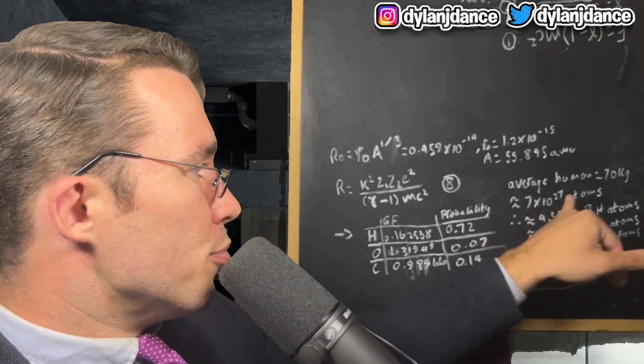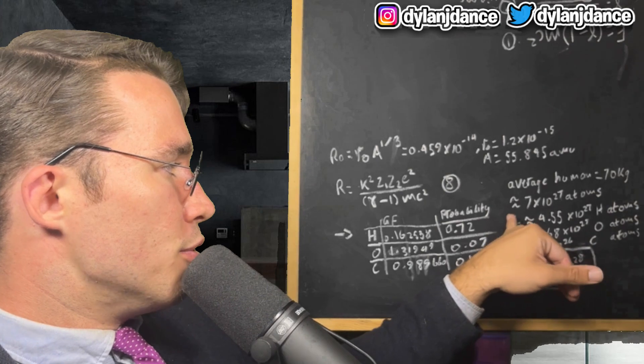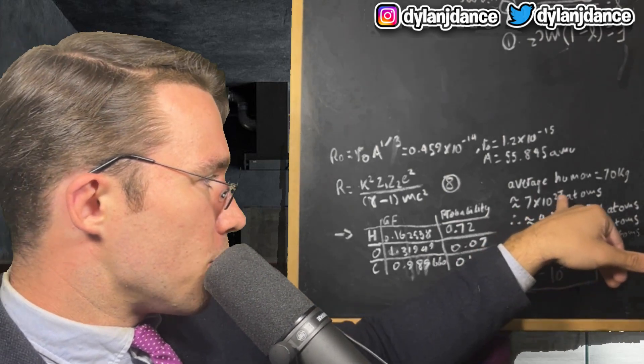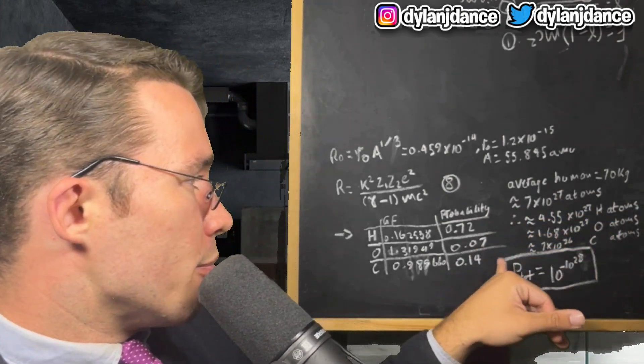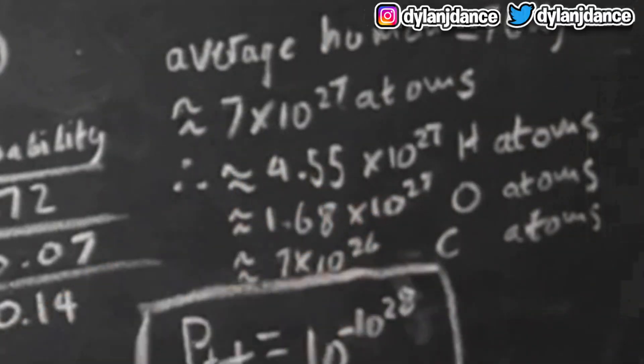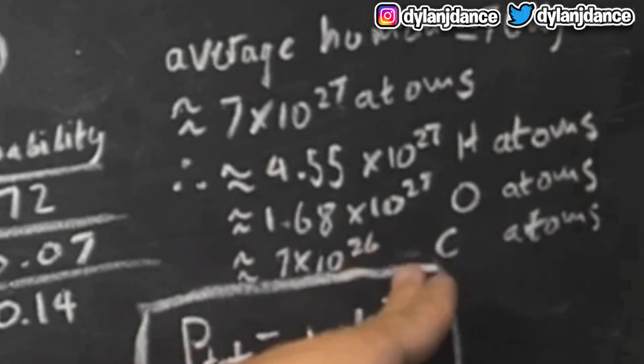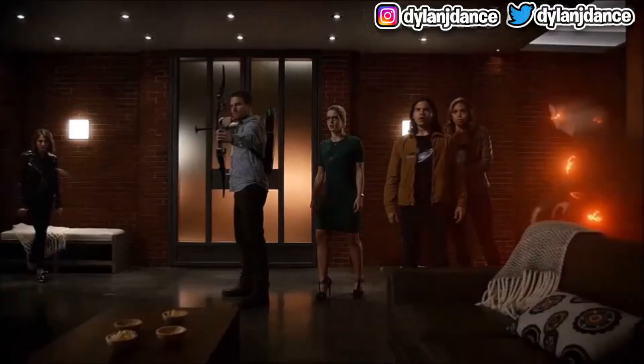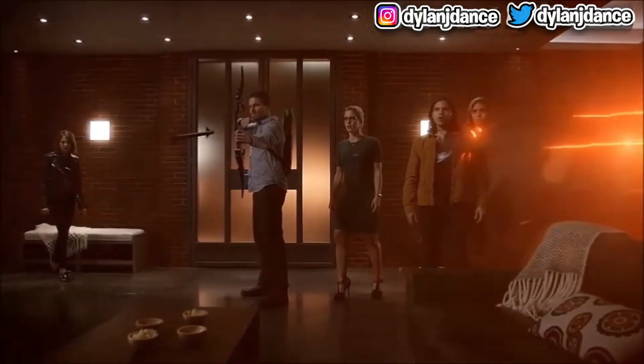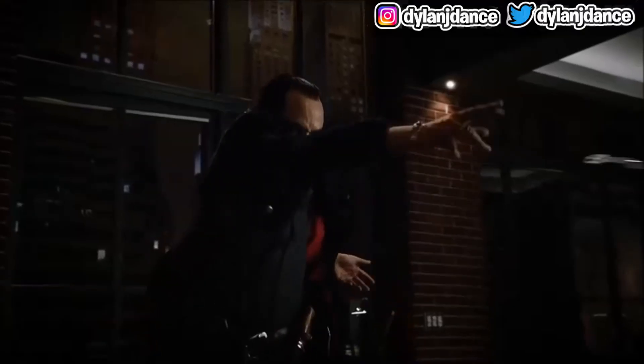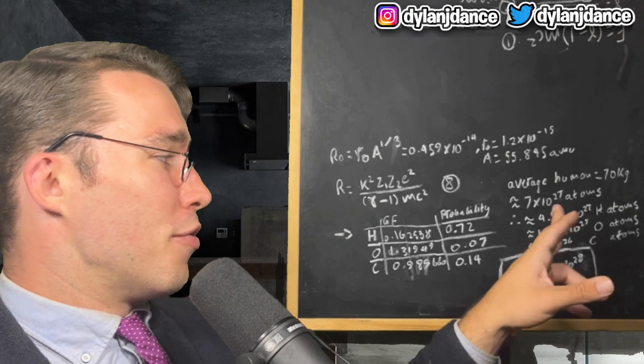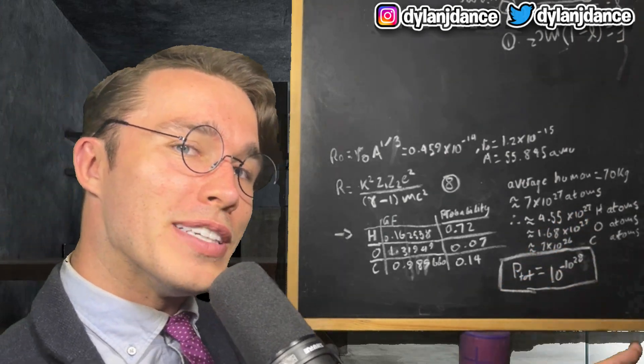Around 99% of the human body is composed of three elements: hydrogen 65%, oxygen 24%, and carbon 10%. As a result, we only considered these three for calculating. The average human of about 70 kilograms is composed of approximately 7 times 10 to the 27 atoms. That's 4.55 times 10 to the 27 hydrogen atoms, 1.68 times 10 to the 27 oxygen atoms, and 7 times 10 to the 26 carbon atoms. If the quantum tunneling of each atom is independent and not mutually exclusive, then the total probability equals 10 to the power of negative 10 to the power of 28.